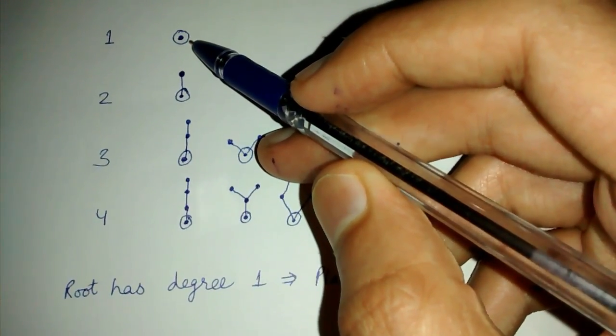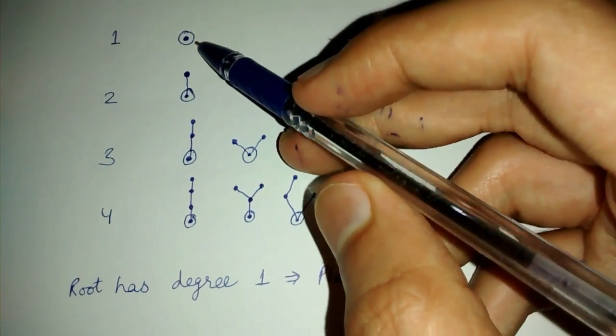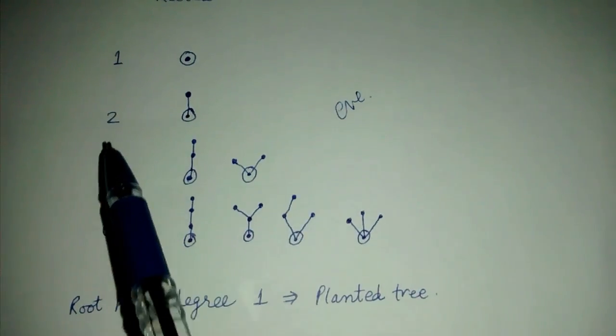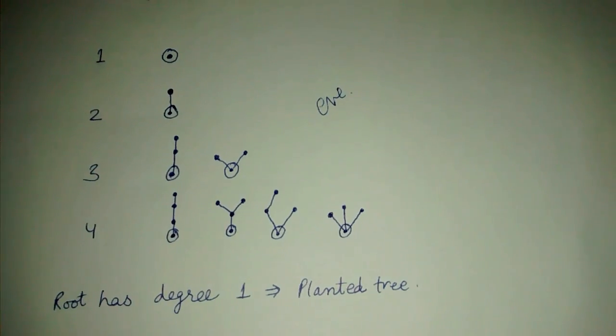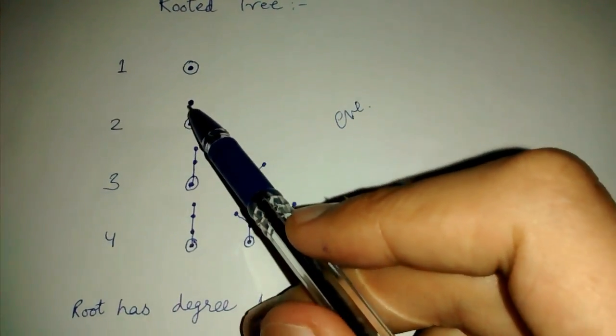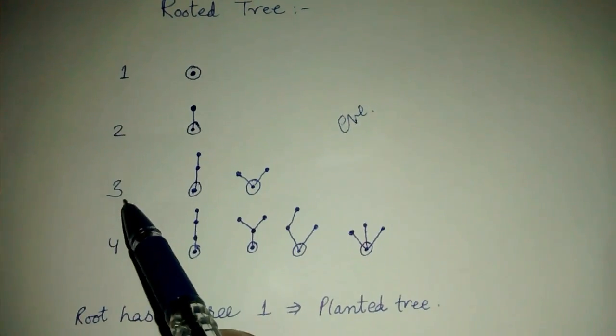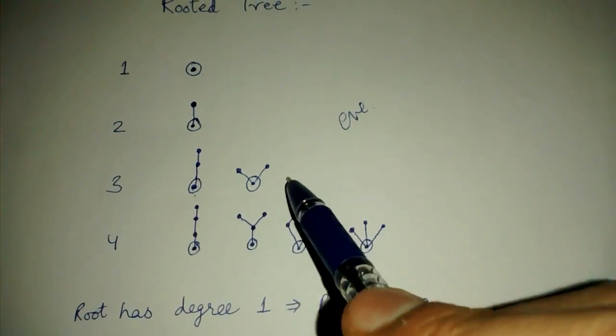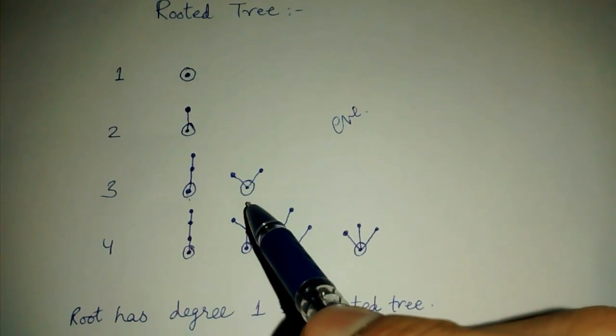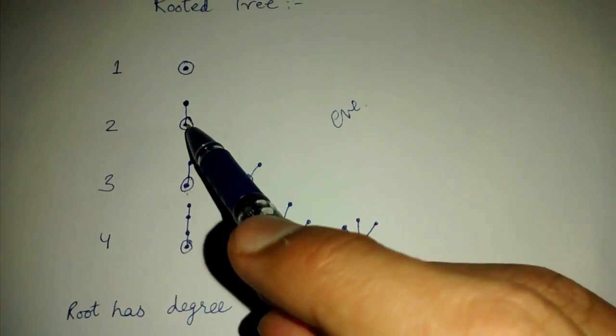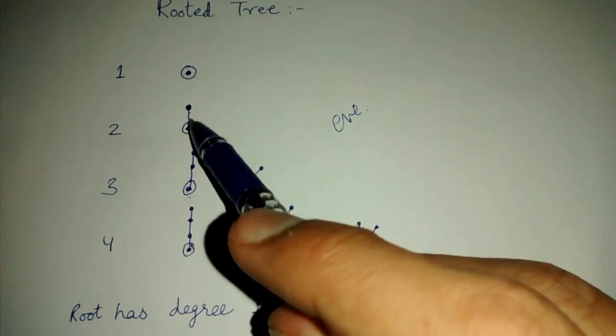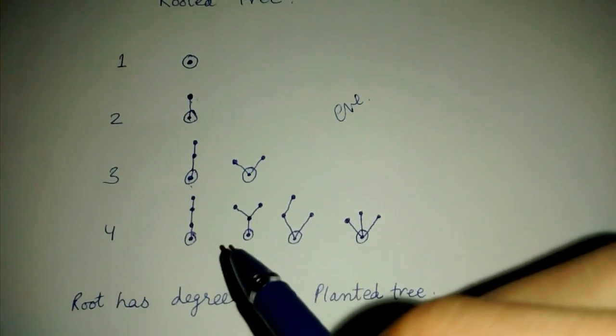If there is only one node in the tree, then there is just a single possibility of a rooted tree. If there are two nodes, then we can mark one of them, so again a single. And if there are three nodes, these are the two possible rooted trees. We can mark this or this, but we are counting it as one because all the nodes are identical.